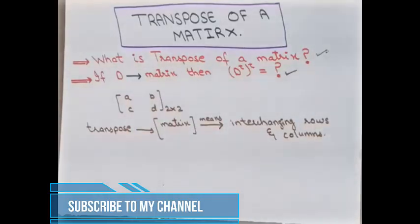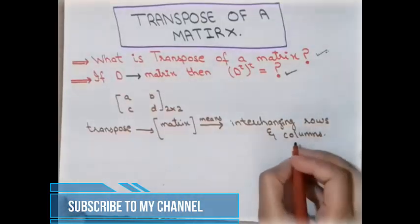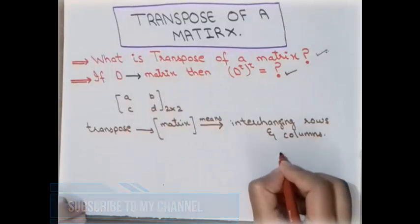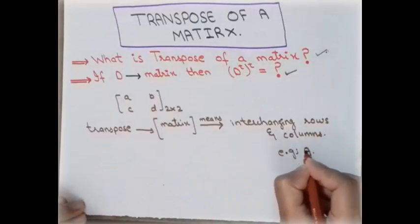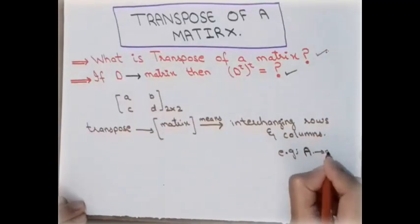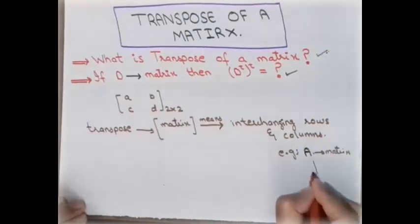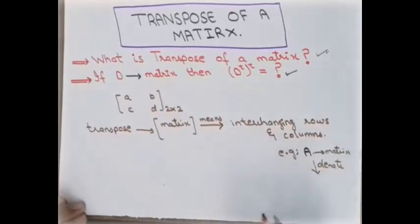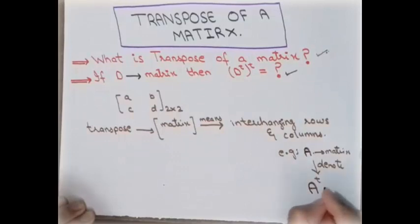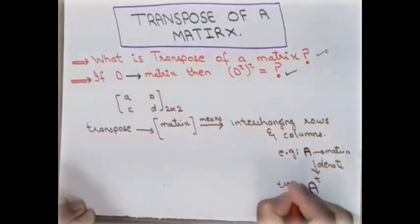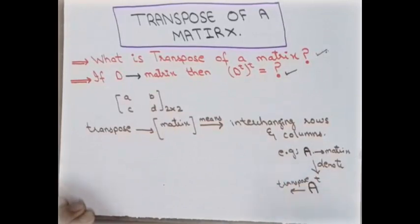First, let's understand the notation. A matrix is always represented by a capital letter. If A is a matrix, then the transpose of A is denoted by a capital letter A with a small T in the superscript. This is called the transpose of matrix A.